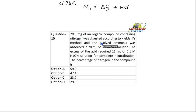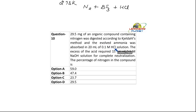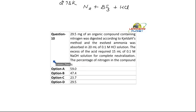29.5 milligrams of an organic compound containing nitrogen was digested according to Kjeldahl's method. The evolved ammonia was absorbed in 20 ml of 0.1 molar HCl. The excess acid required 15 ml of 0.1 molar NaOH solution for complete neutralization. Whatever nitrogen was present in the organic compound was evolved as ammonia, and that ammonia was absorbed with HCl.